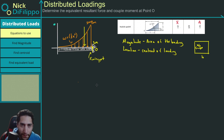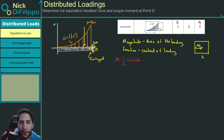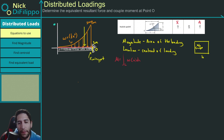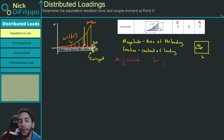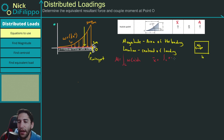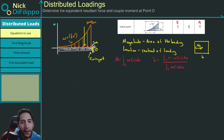Alternatively, maybe you're at an exam and you don't have a table. You can use integration. The magnitude is equal to the integral over the entire length of the loading w(x) dx. The location x̄ is equal to the integral of x times w(x) dx divided by the integral of w(x) dx — where the denominator is just the magnitude, or area.